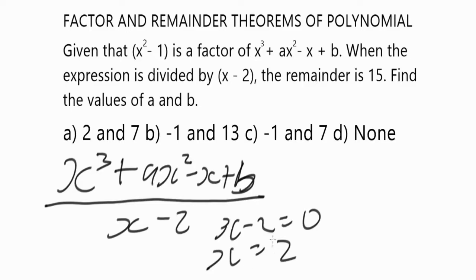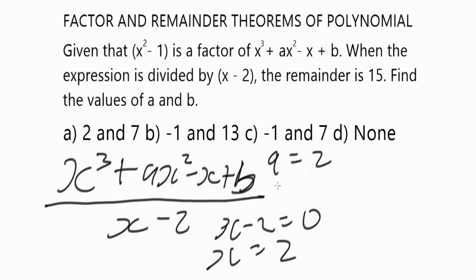Now that x is two, what you are going to do next is look at our options. You are going to be substituting the values of a and b with the values we have in the options respectively. So firstly, let's take our a to be two and our b to be seven.